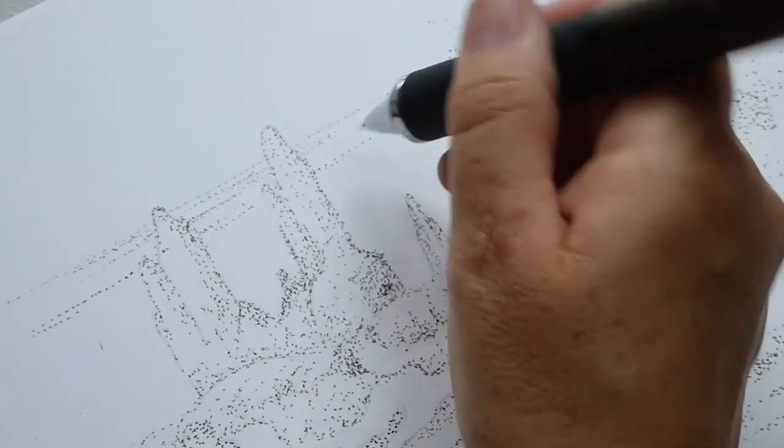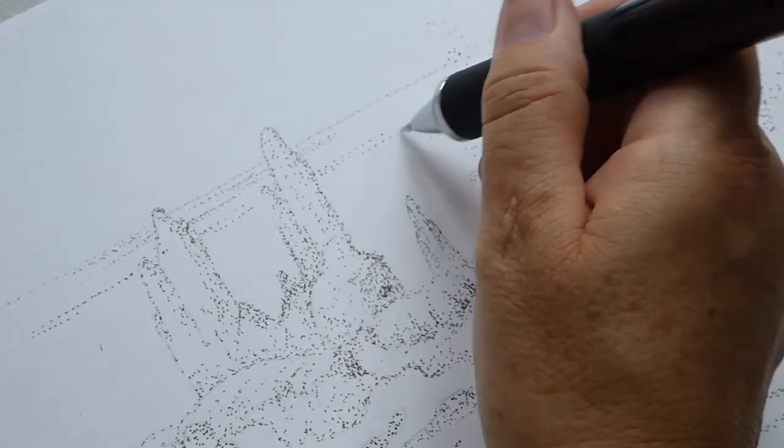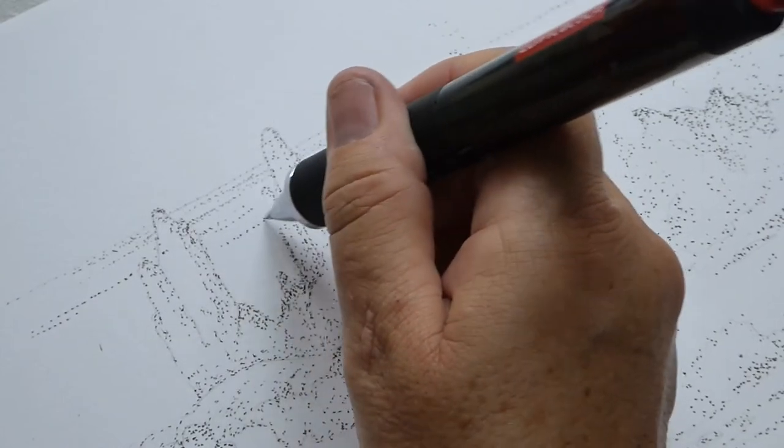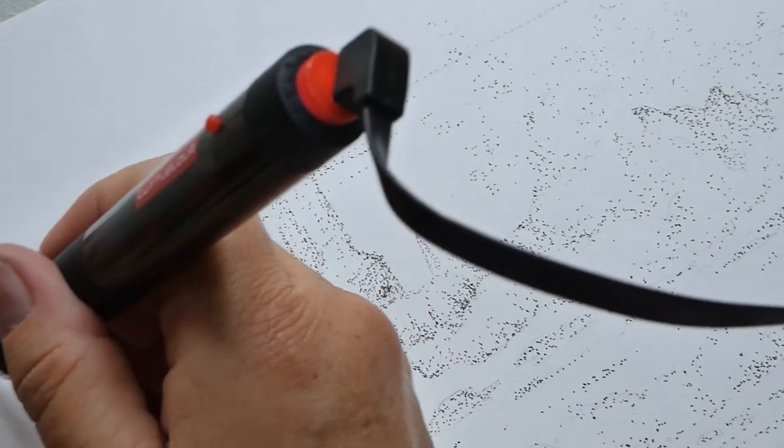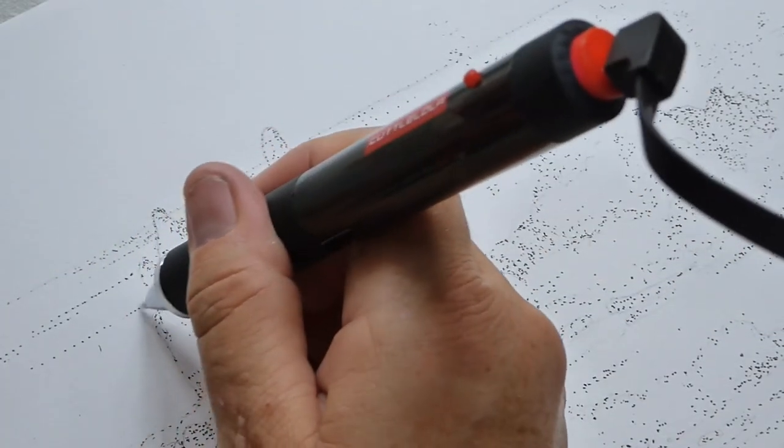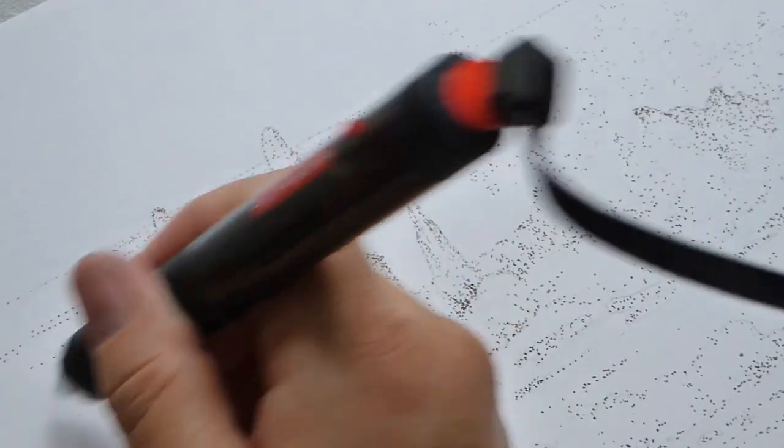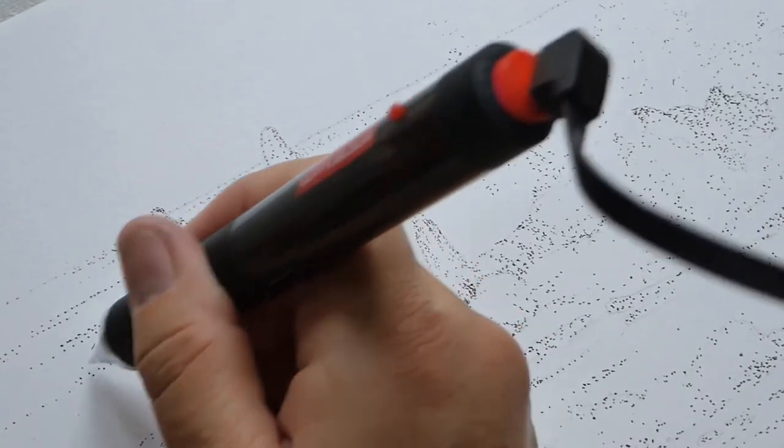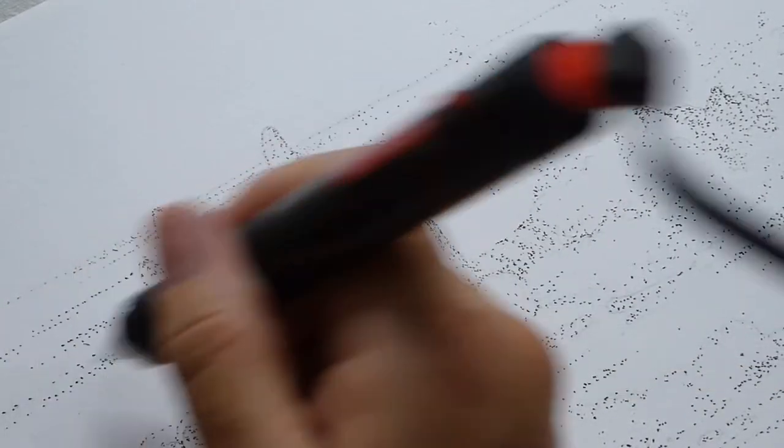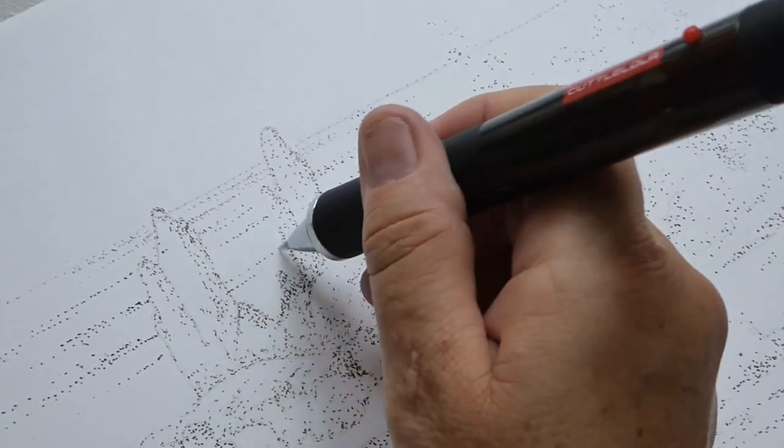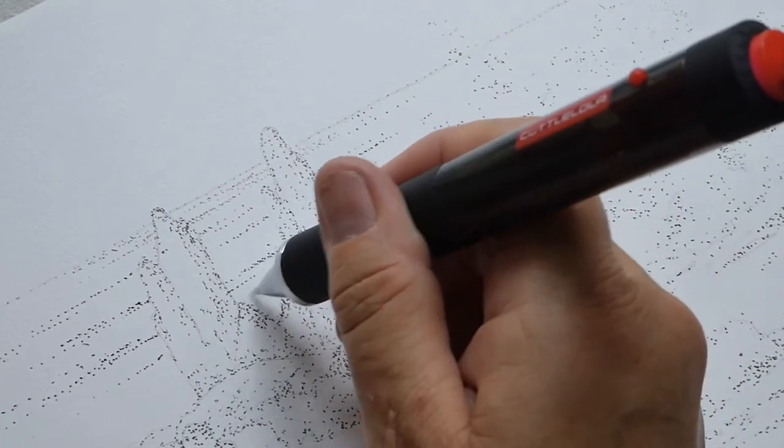I would recommend that you hold the pen vertically. It seems to be easier to use vertically. I'm putting it on a slight angle here just so that you can see what I'm doing. I didn't want to block the camera.